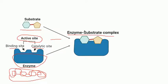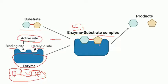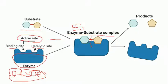Here we have a substrate that is going to bind with the enzyme and form the enzyme-substrate complex, also known as the ES complex. The substrate is recognized by the binding side, which helps bind the substrate to the active site of the enzyme. After binding, the substrate is converted into product — it is broken down — and the enzyme remains unchanged and can be used again for another reaction.